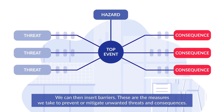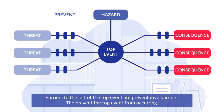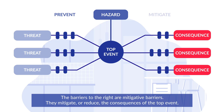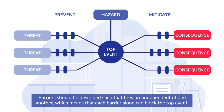We can then insert barriers. These are the measures we take to prevent or mitigate unwanted threats and consequences. Barriers to the left of the top event are preventative barriers — they prevent the top event from occurring. The barriers to the right are mitigative barriers; they mitigate or reduce the consequences of the top event. Barriers should be described such that they are independent of one another, which means that each barrier alone can block the top event.